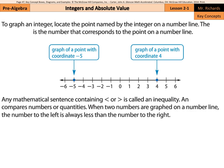To graph an integer, locate the point named by the integer on a number line. The coordinate is the number that corresponds to the point on a number line. Graph a point with coordinate negative five. Graph a point with coordinate four.